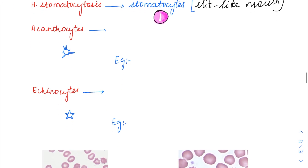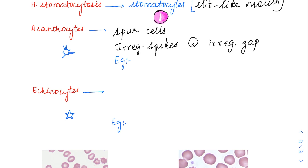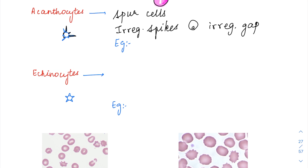Then we have acanthocytes and echinocytes — again membrane defects. Acanthocytes are nothing but spur cells, meaning on the membrane of the RBCs there are irregular spikes occurring at irregular gaps — random small and large irregular spikes at irregular distance. These are called acanthocytes or spur cells and are seen in abetalipoproteinemia.